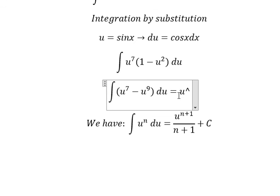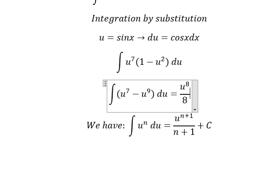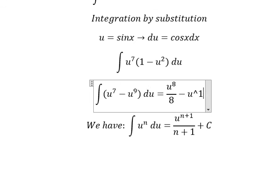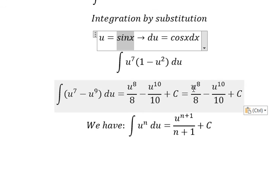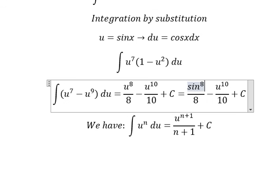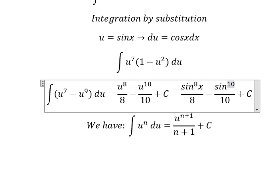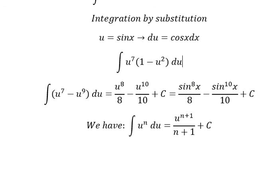We get u^8/8 because 7 + 1 equals 8 for both the power and the denominator. Similarly for the next term, we get u^10/10. So the final answer is u^8/8 - u^10/10 + C. Thank you for watching.